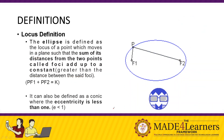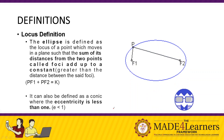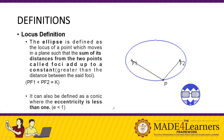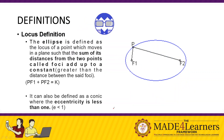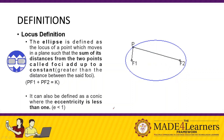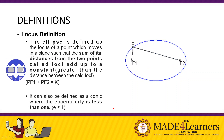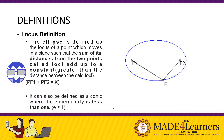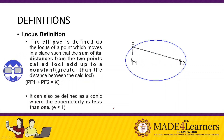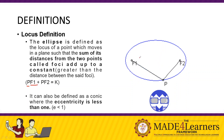The second definition is the locus definition. When we say locus, it refers to a point with a condition. The ellipse is defined as the locus of a point which moves in a plane such that the sum of its distances from two fixed points called the foci adds up to a constant.